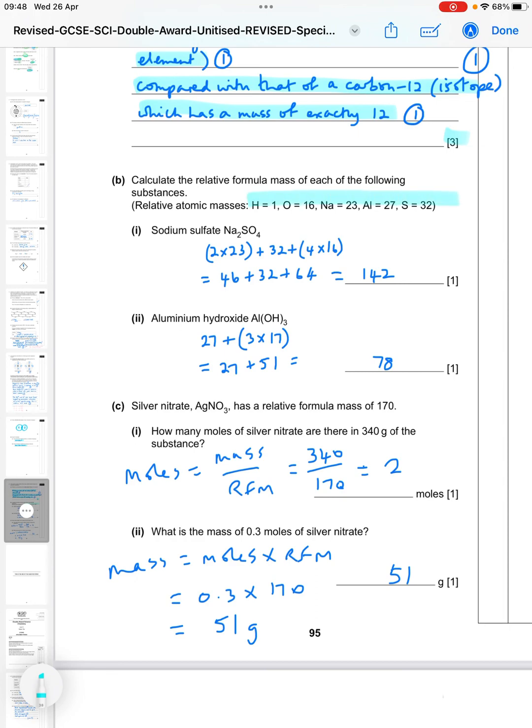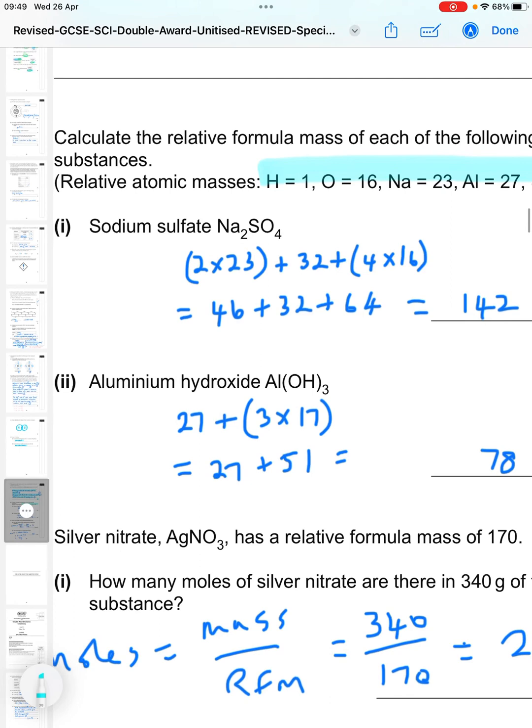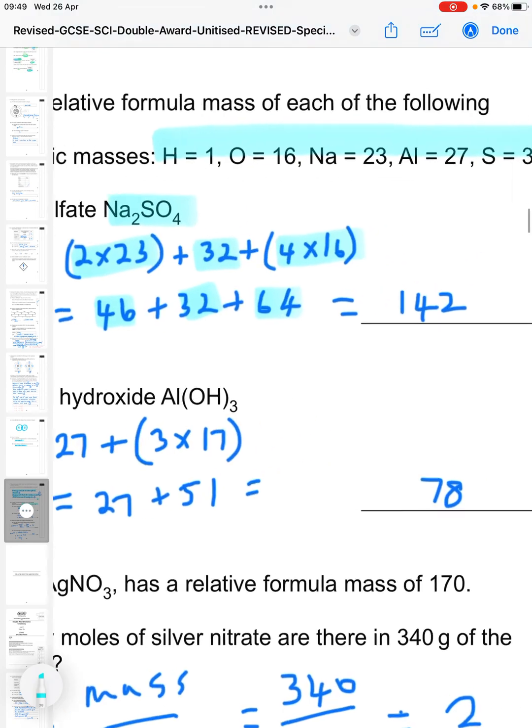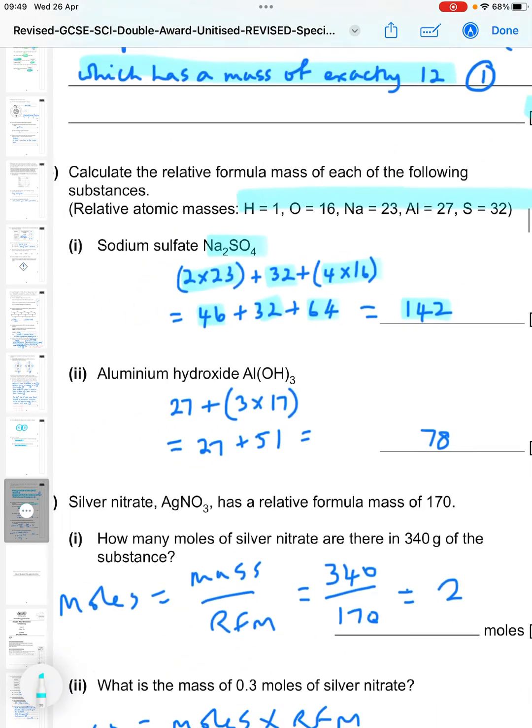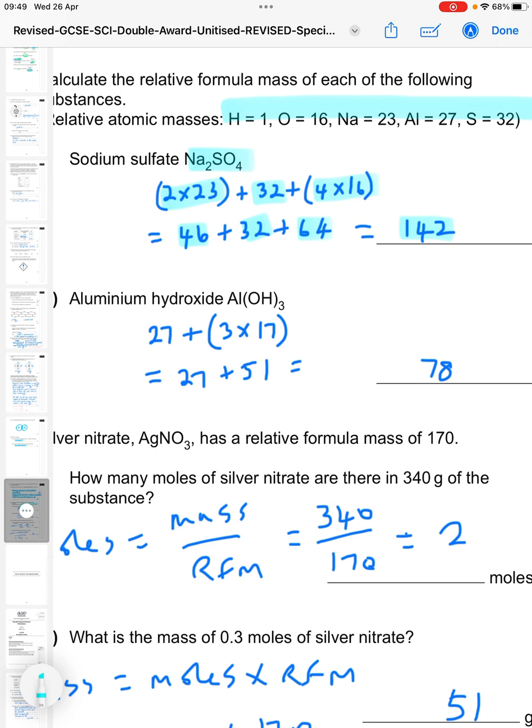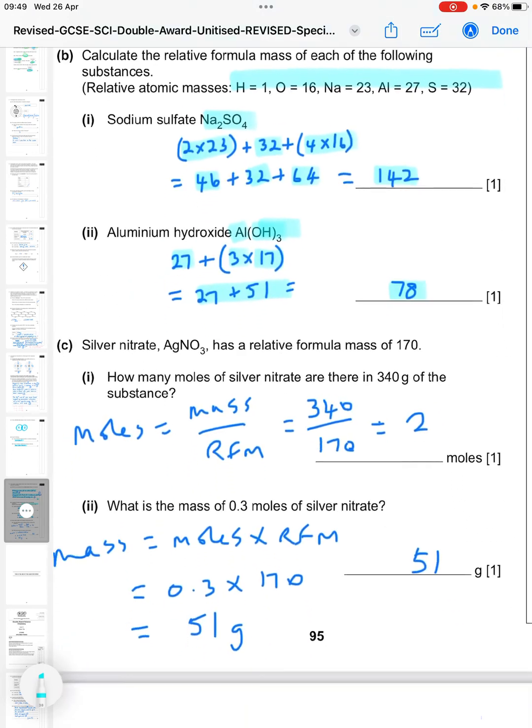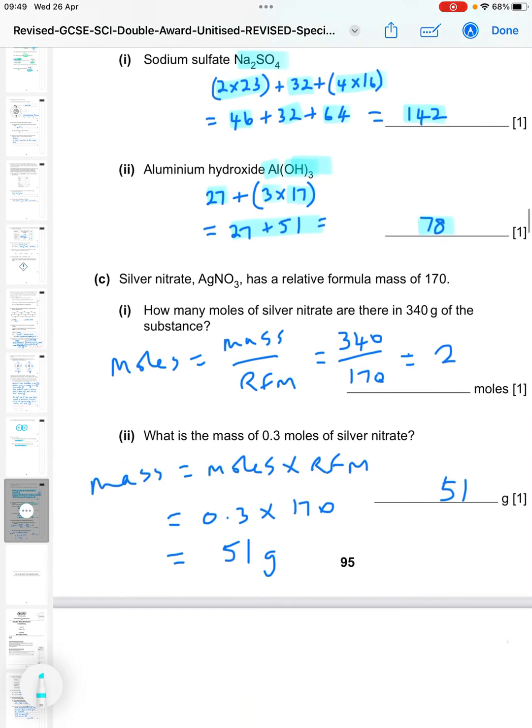Then the calculations. Calculate the relative formula mass of each of the following substances. So you've got the atomic masses are given there, so it's just a matter of adding them all up. So you've got sodium sulfate, Na2SO4. We've got two sodiums, two 23s, sulfur is 32, and four oxygens, four 16s. So that's 46 plus 32 plus 64, which is 142. Then the aluminium hydroxide, Al(OH)3. So we've got one aluminium and then OH3. So I've taken that just as a group. So OH, one oxygen, one hydrogen, 16 plus 1 is 17, and I've multiplied that by 3. So 27 and 51 is 78.